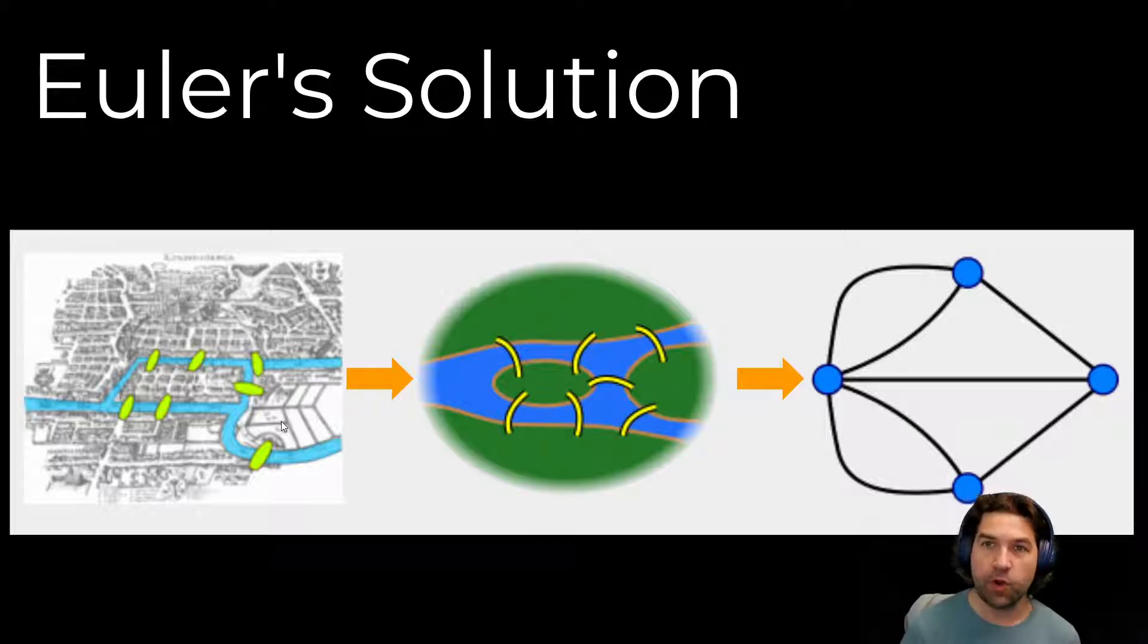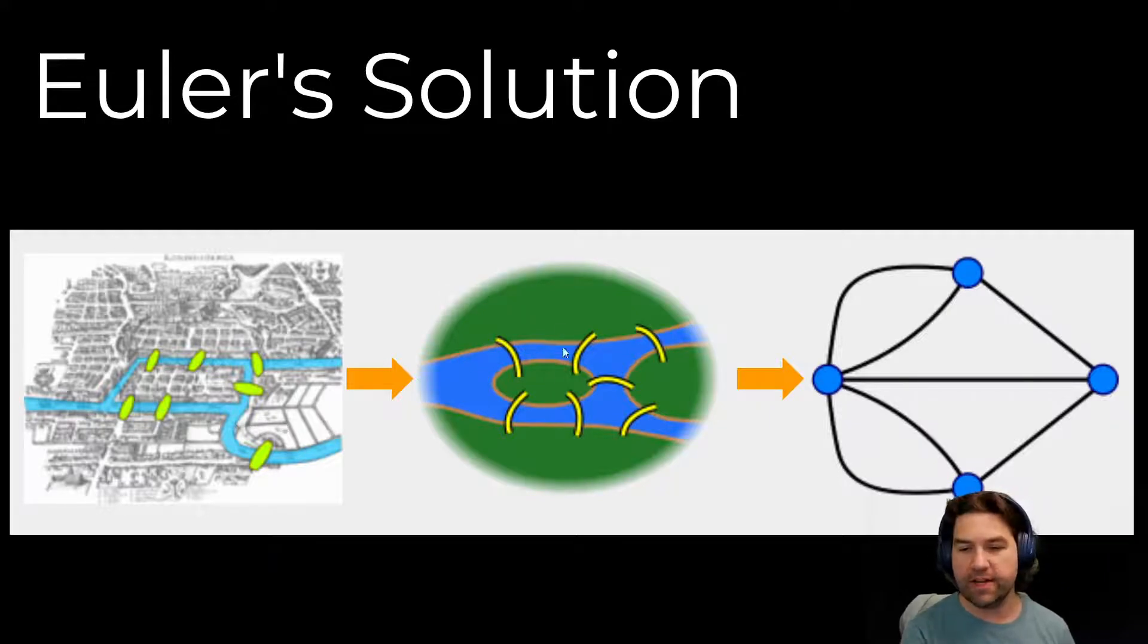Euler's solution wasn't to think about bridges like everyone else was. Instead, he broke it down not into the bridges, but the connections between those bridges, taking these large land masses and instead turning them into nodes and thinking of the bridges as lines that connect those nodes.